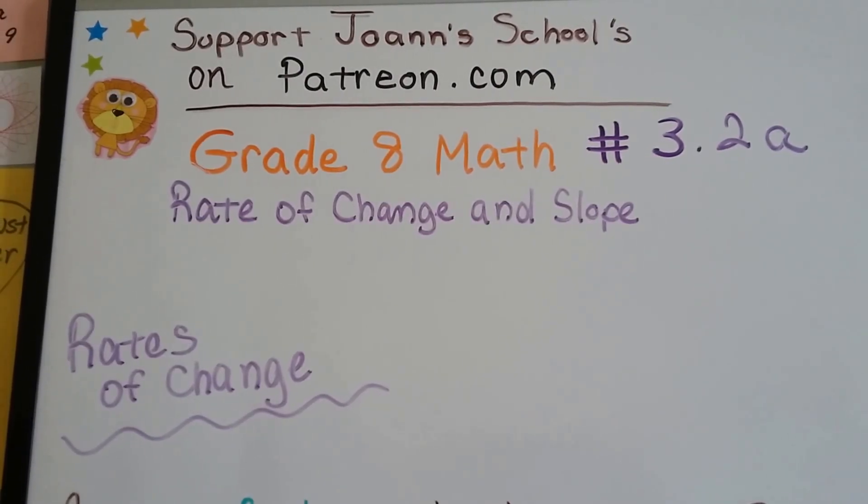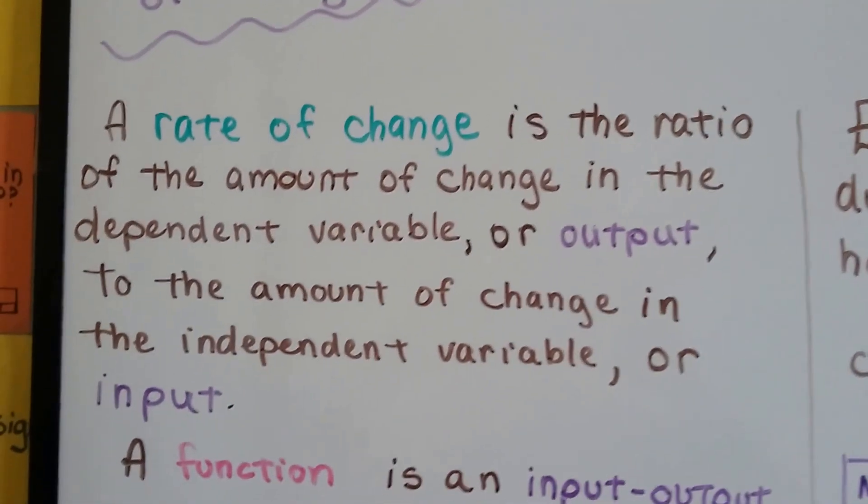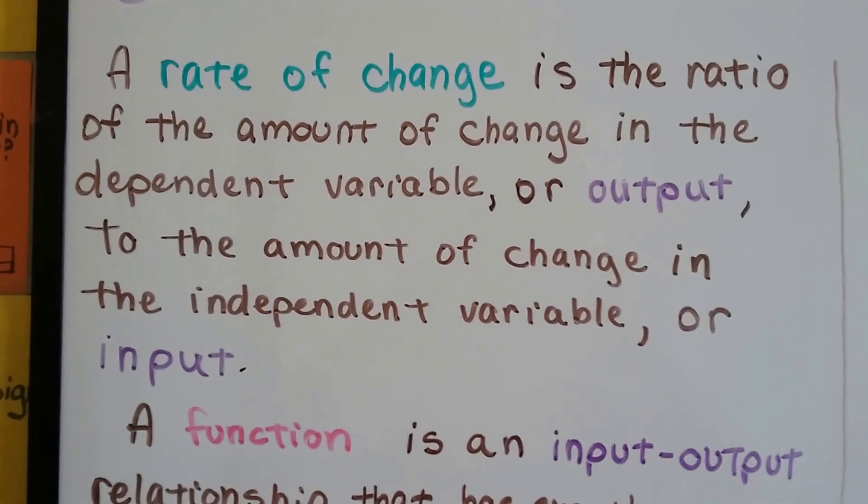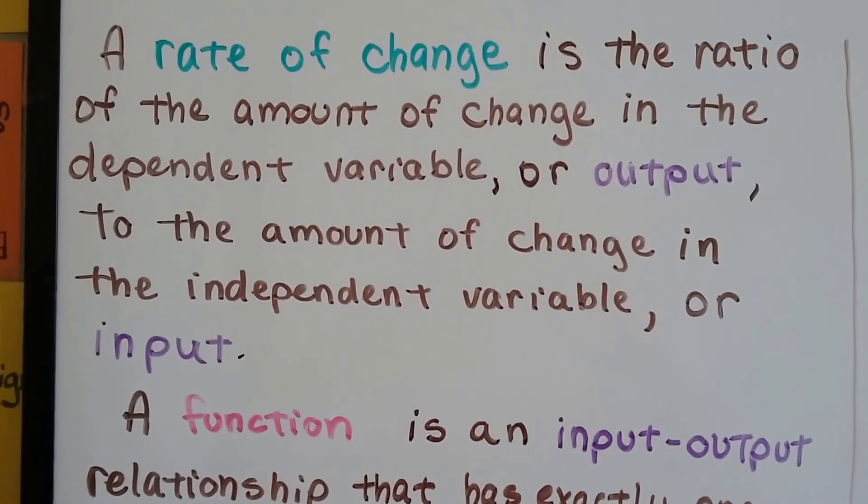Grade 8 math number 3.2a, Rates of Change. A rate of change is the ratio of the amount of change in the dependent variable, or output, to the amount of change in the independent variable, or input.